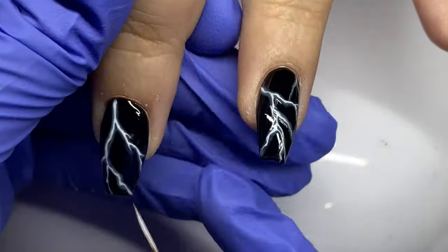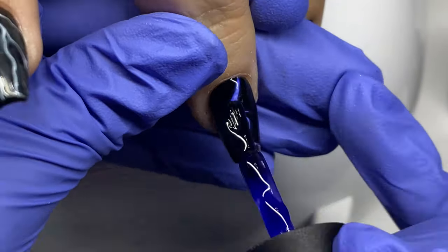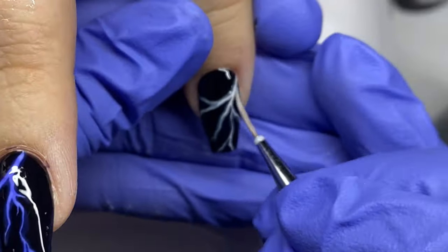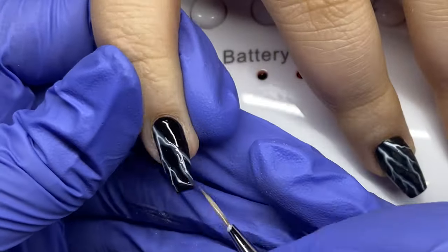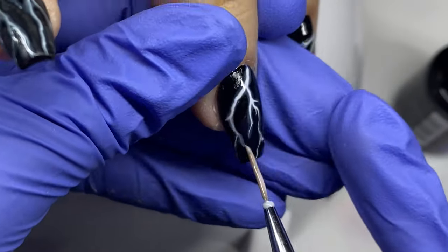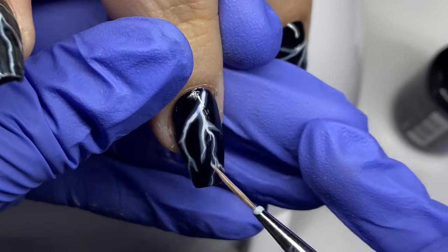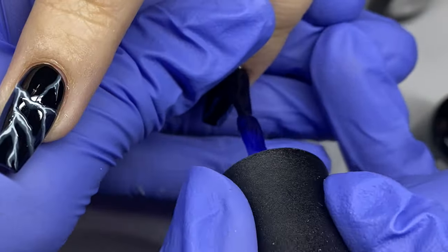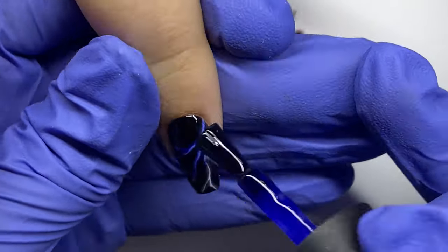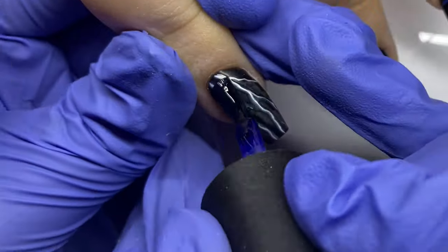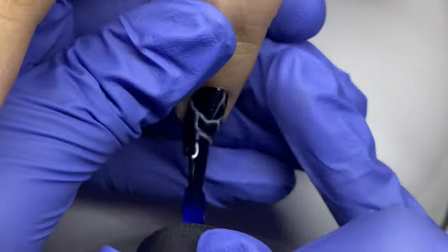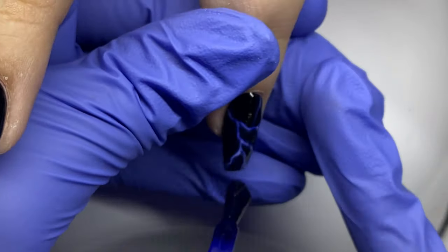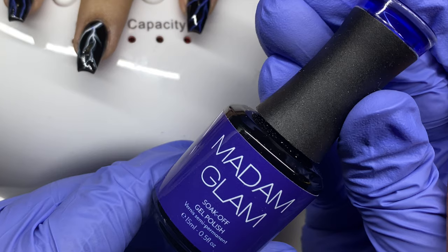You can check out that video just to see this process done a little more elaborately. After I outlined with Milk Bath, I cured, and I'm going to take a sheer blue jelly color. I was trying to experiment the best way to go about this and if I should just put it over the white lines or over the entirety of the nail. I decided it was easier to do it over the entirety of the nail since we have that black base.